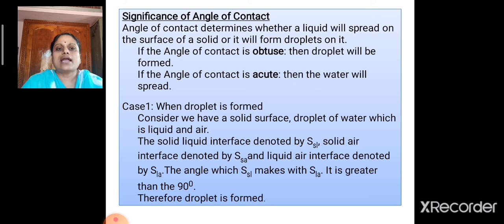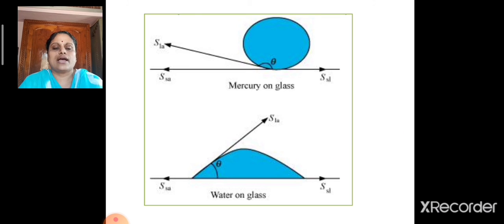The angle which SSL makes with SLA is greater than 90 degree. Therefore, a droplet is formed as we had seen in the previous case.